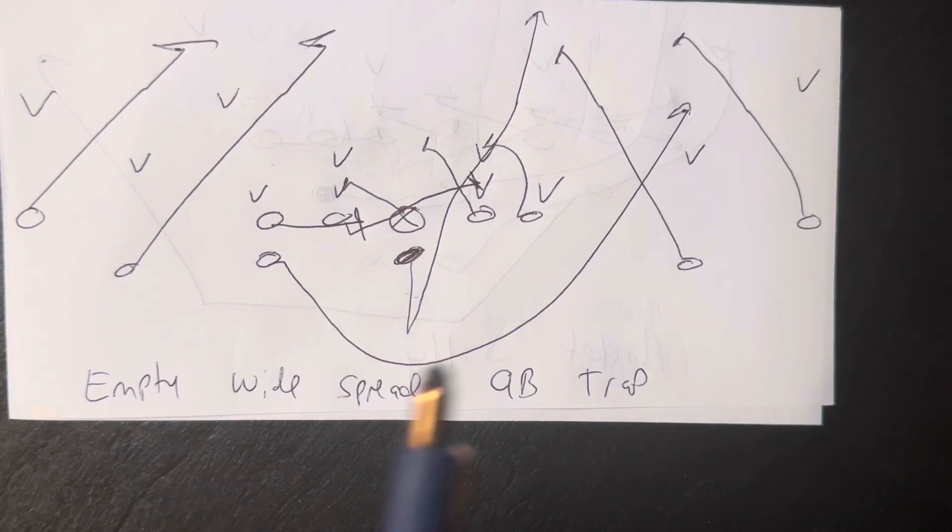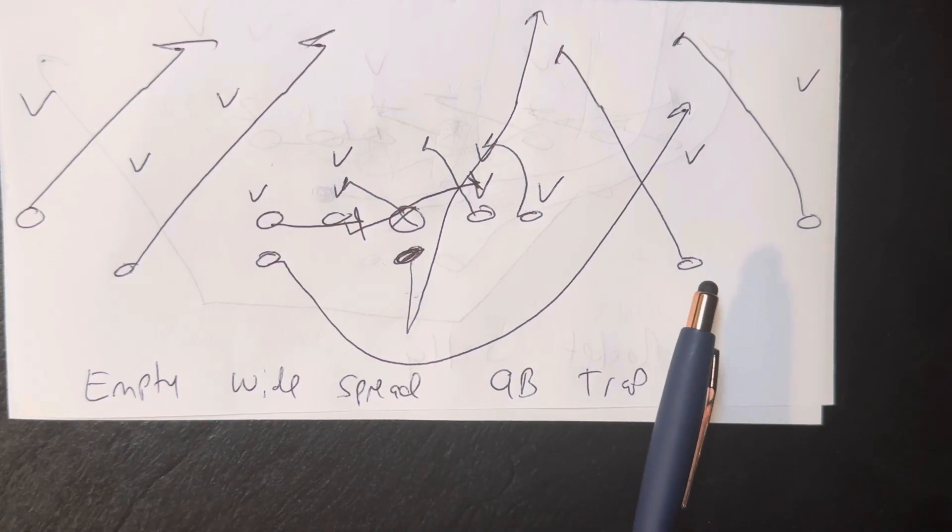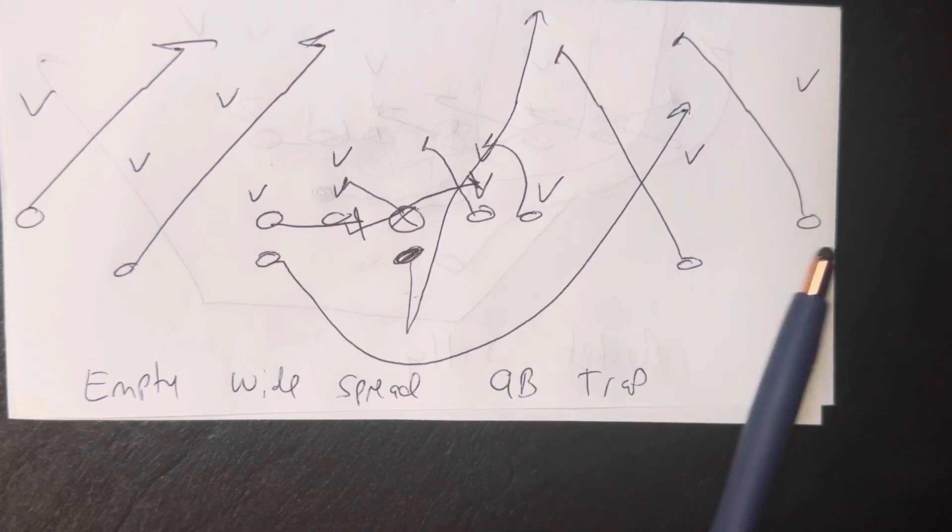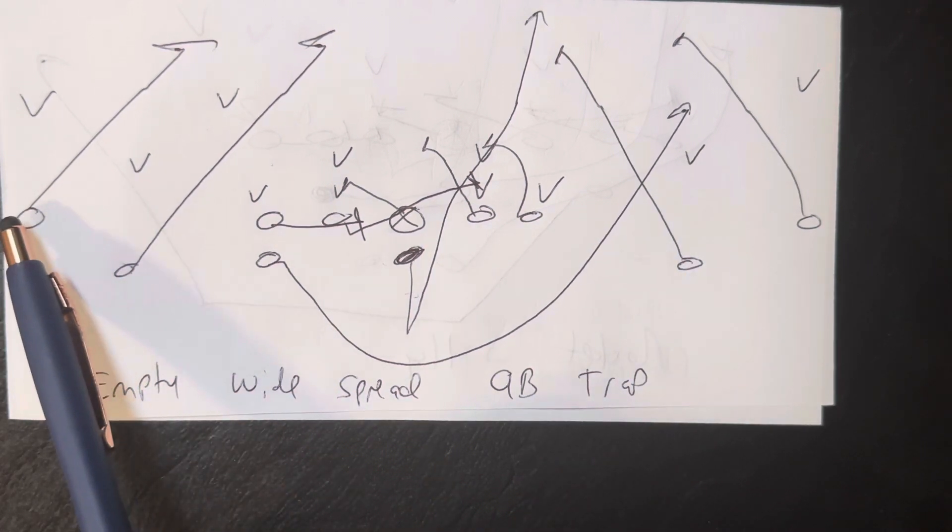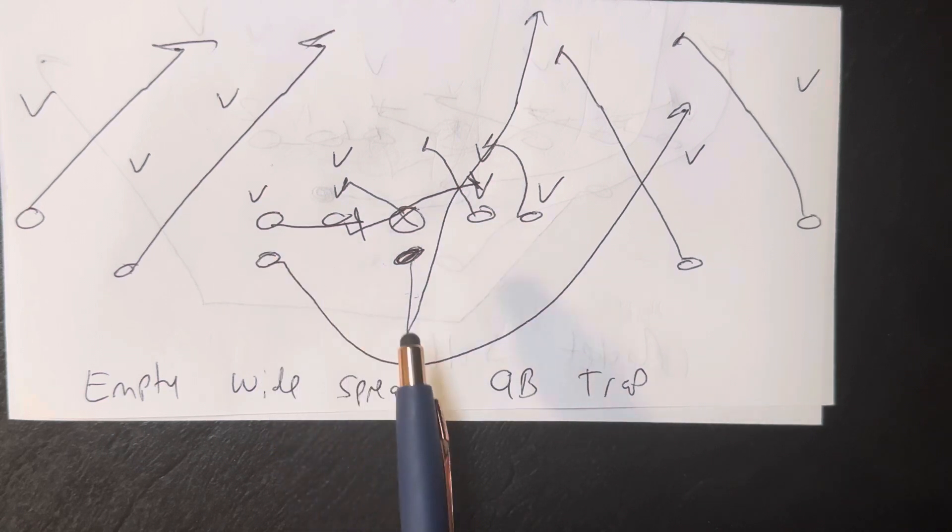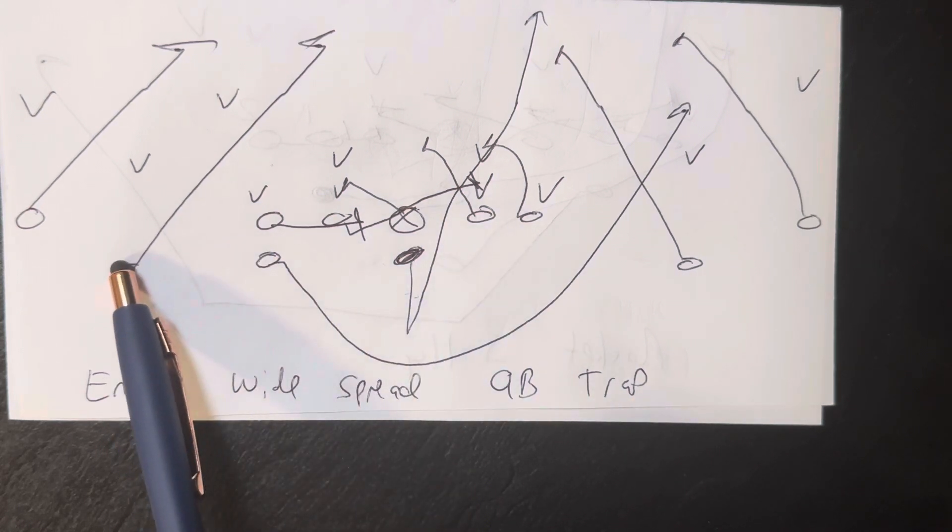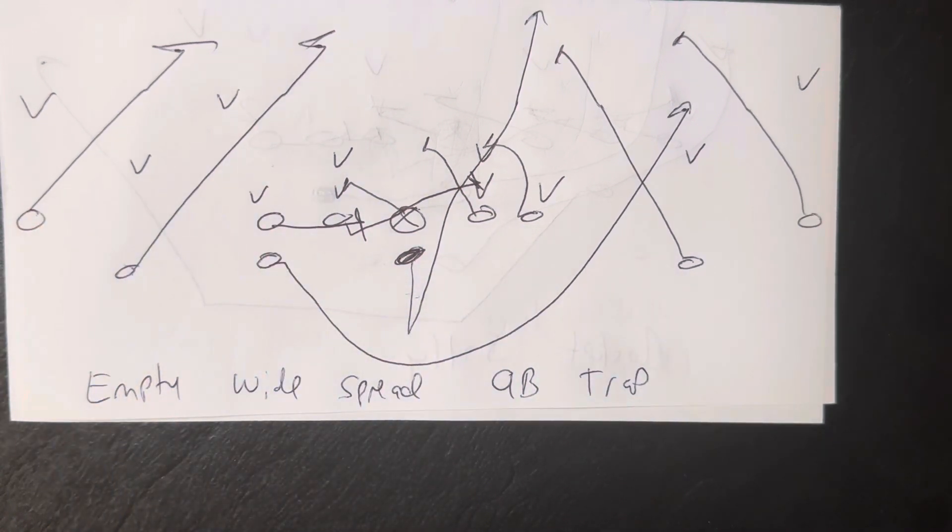So if you go with the empty widespread formation, it's going to put this A-back between the tackle and the receiver. The receiver's going to be on the numbers with his inside foot up. The A-back's going to split the difference. You got the receiver over here on the numbers with his inside foot up. At the A-back right here, you're going to take the B-back and put him and have him split the difference between the tackle and the receiver.